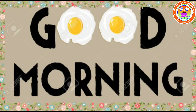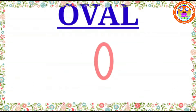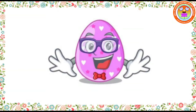Good morning children. In the previous class we saw about star. Today we are going to see about the shape oval. Oval things have a shape that is like a circle but is wider in one direction than the other. I am an oval, also known as the egg shape because I look like an egg.